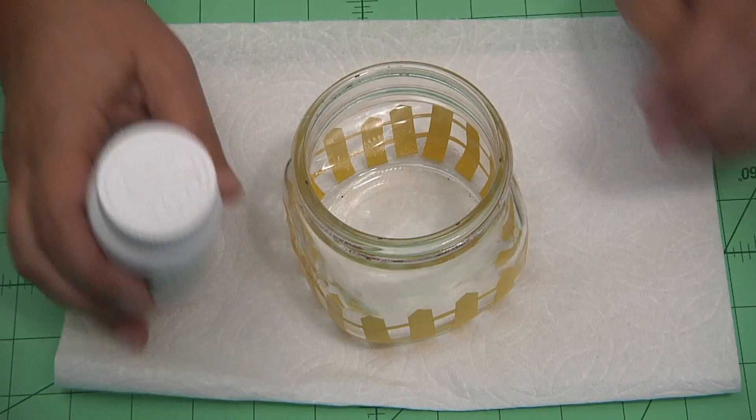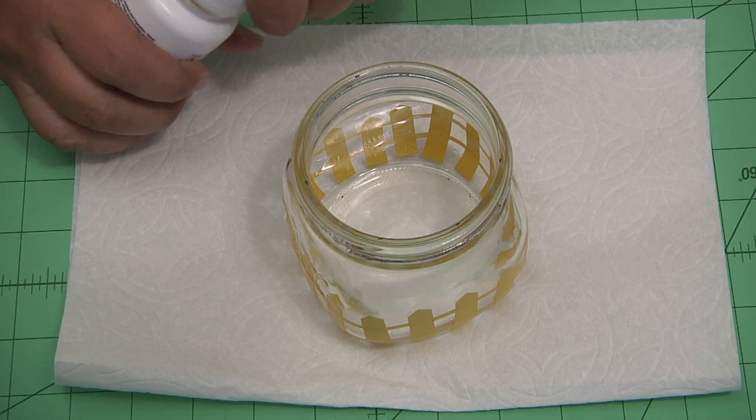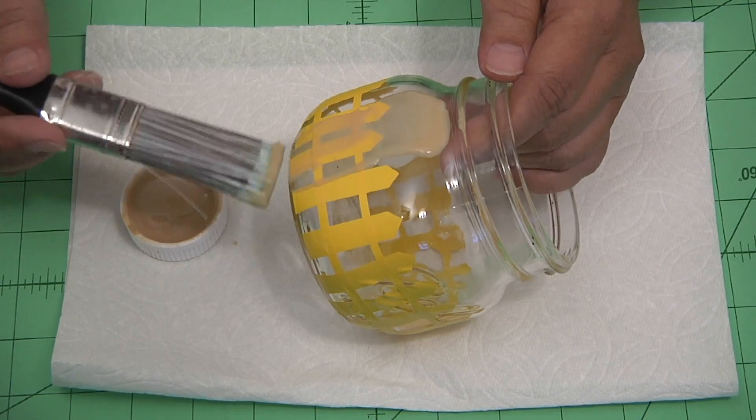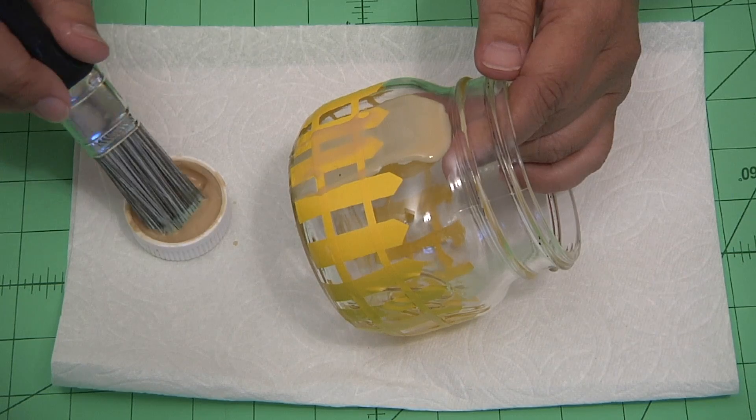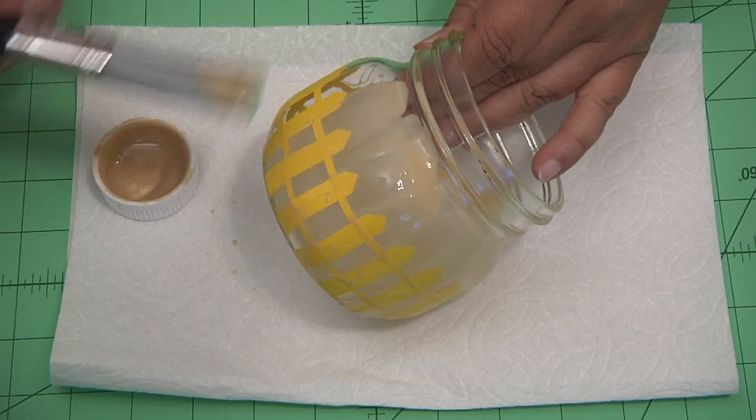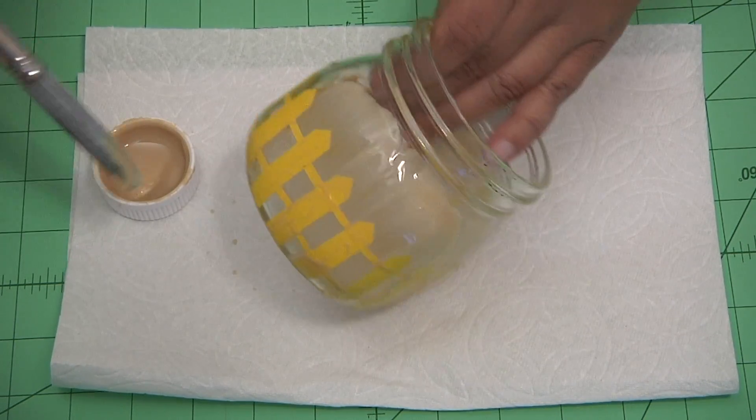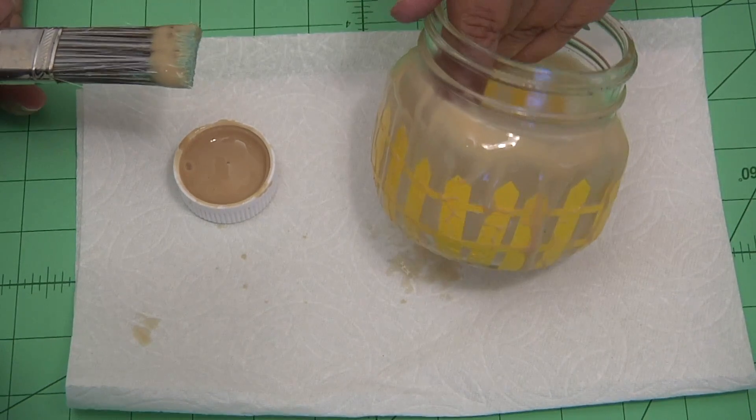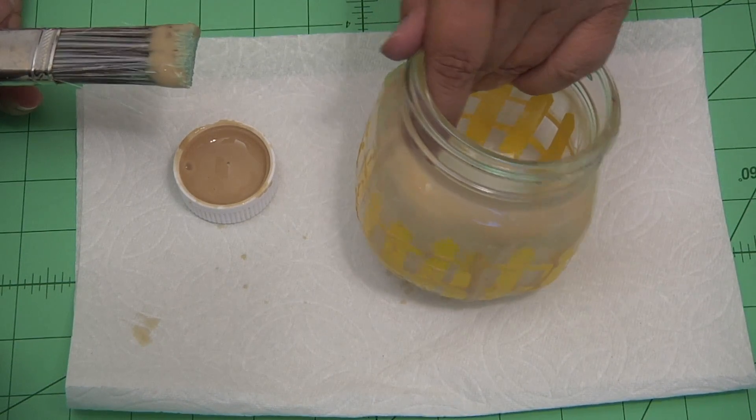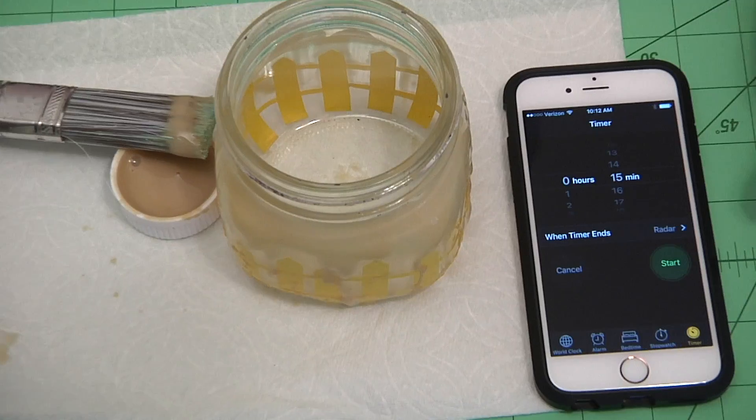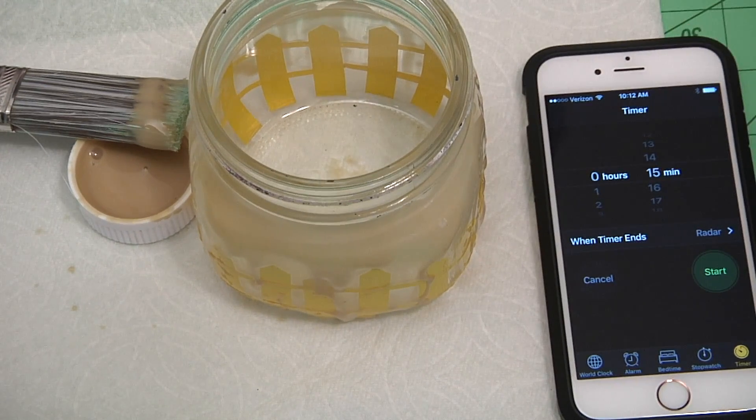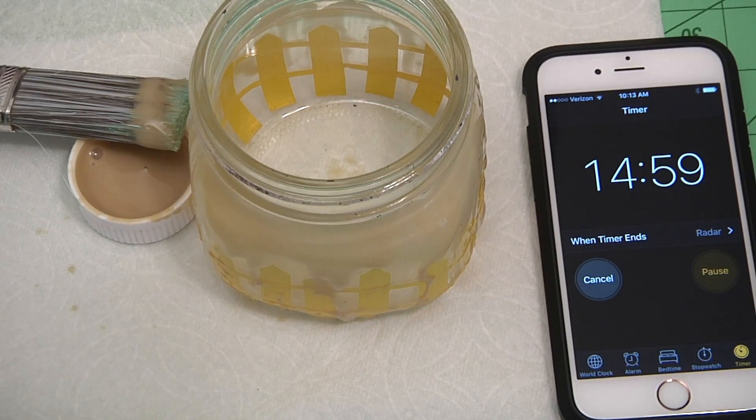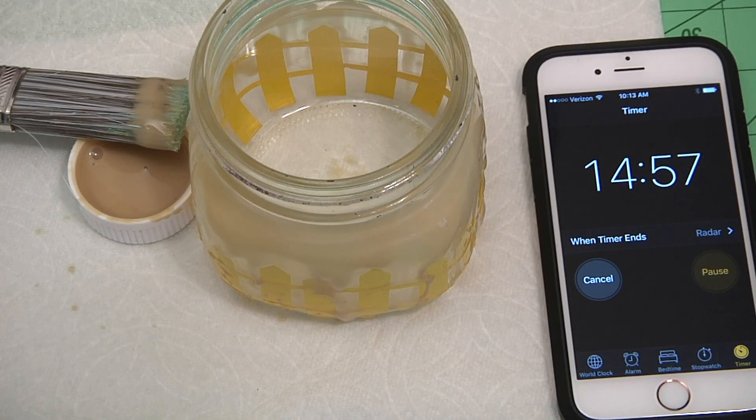Using the etching cream, I poured some into the cap and then very thickly applied the etch cream all the way around the jar. This is really important. You want it to go on thick almost like peanut butter. Do it all the way around your jar. You can always go back if you see anywhere that you don't think it looks thick enough. Once you've gotten all the way around the jar, you're going to let it sit for 15 minutes. Just set your timer and get going on your next step.